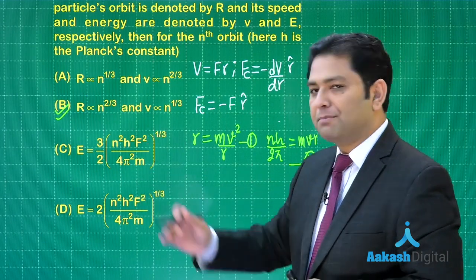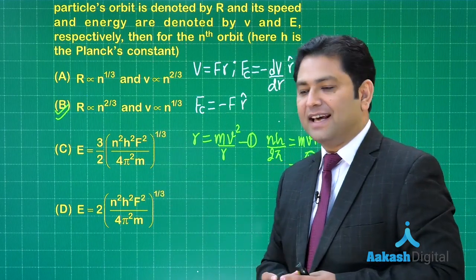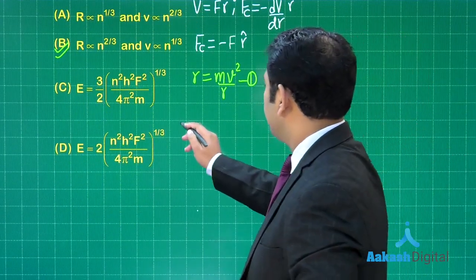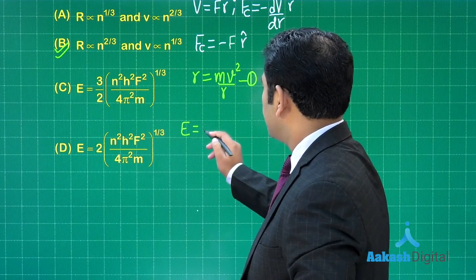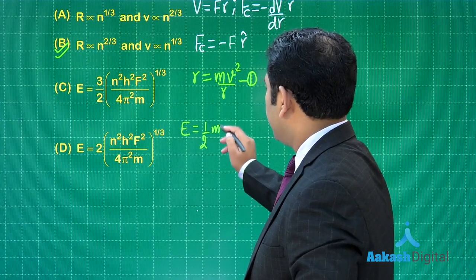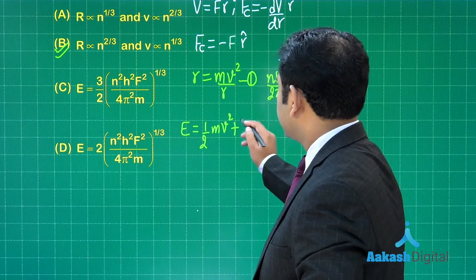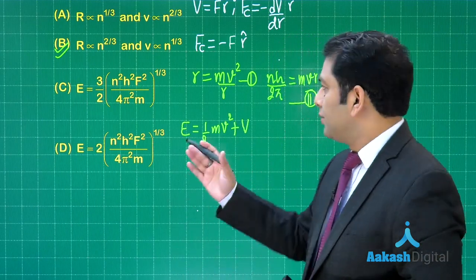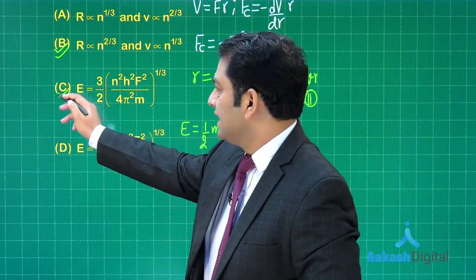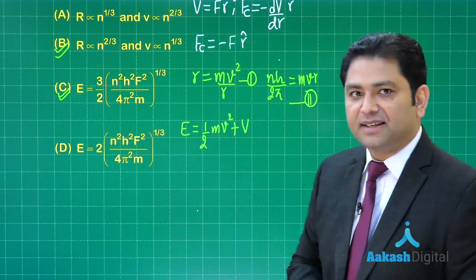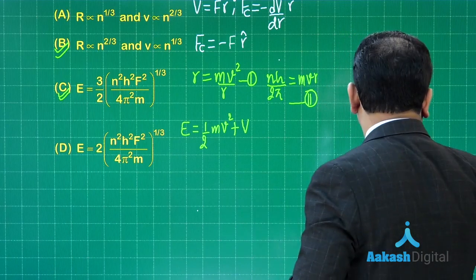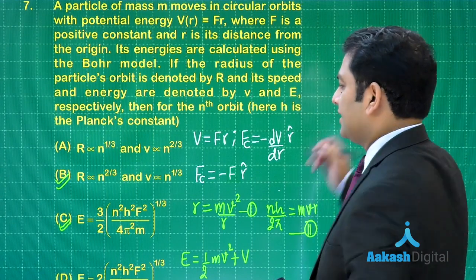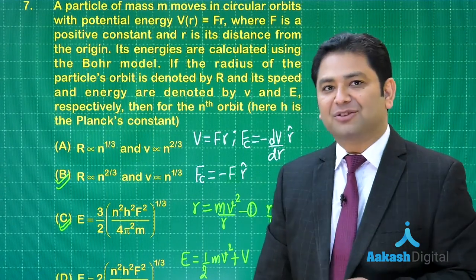Now to choose the option between C and D, we need to calculate the energy, and that will not be a trouble. The total mechanical energy is going to be one half mv squared, which is the kinetic, plus the potential energy is already given. Put these values and you would get option number C as the value of energy. So with regard to question number 7, the correct options are B and C. Let us go to the 8th one.